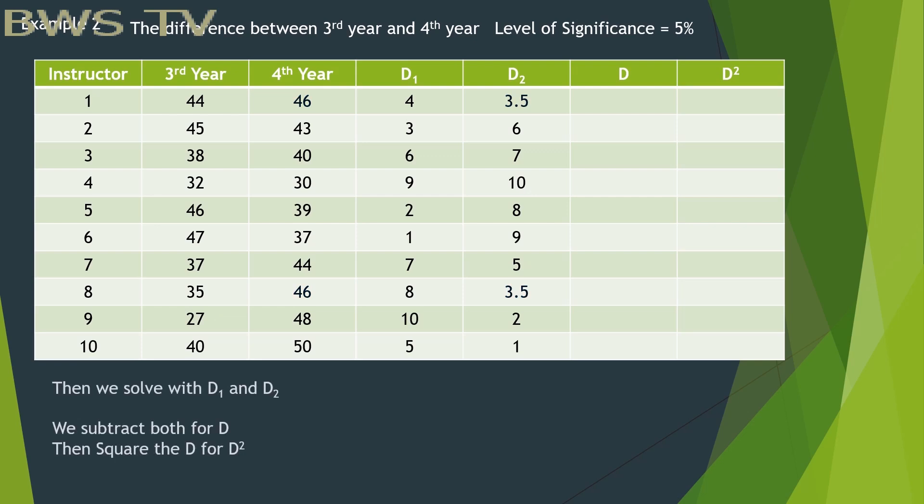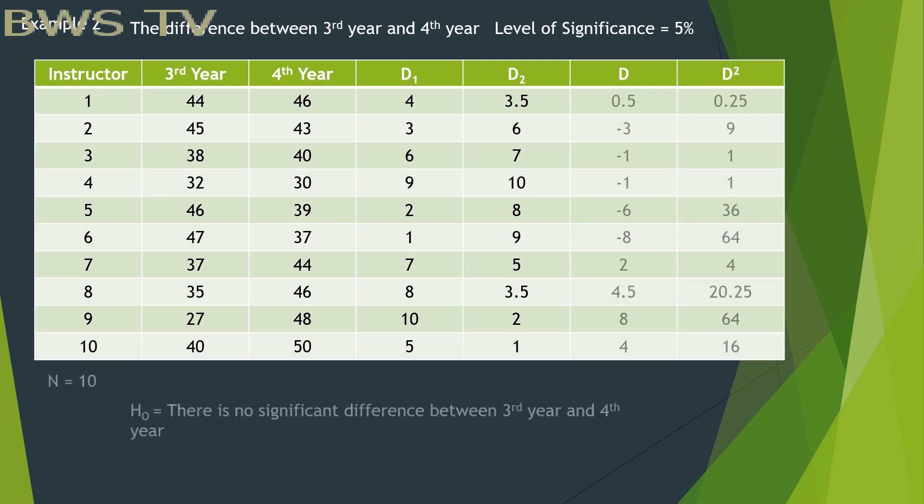Then we solve with D1 and D2. We subtract both for d, then square the d for d squared. Then we sum up the d squared and find the n, after that the null hypothesis. And again, we solve.